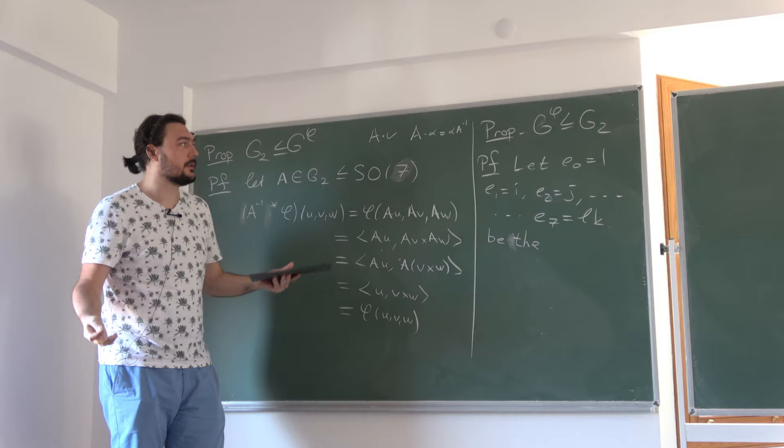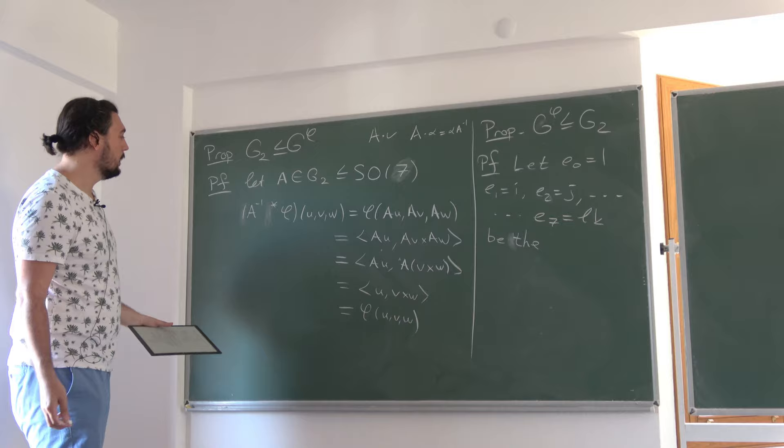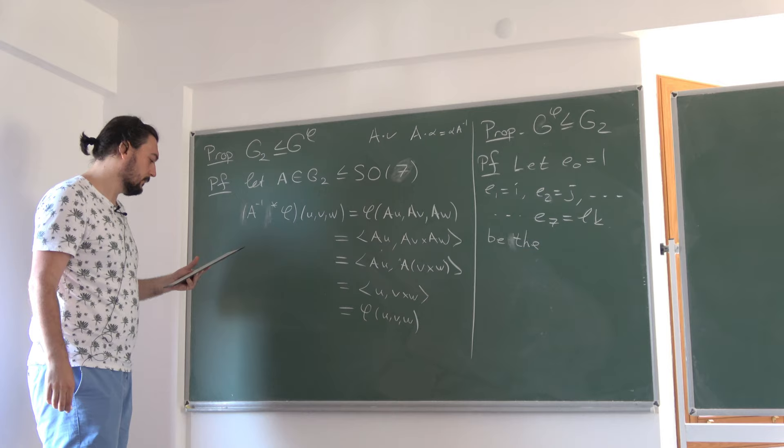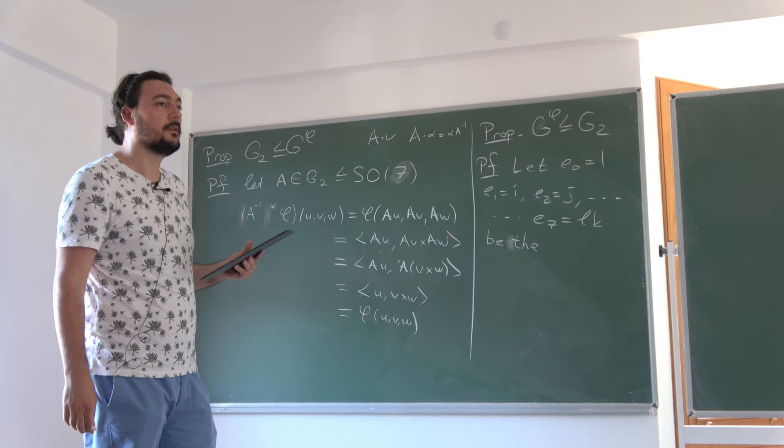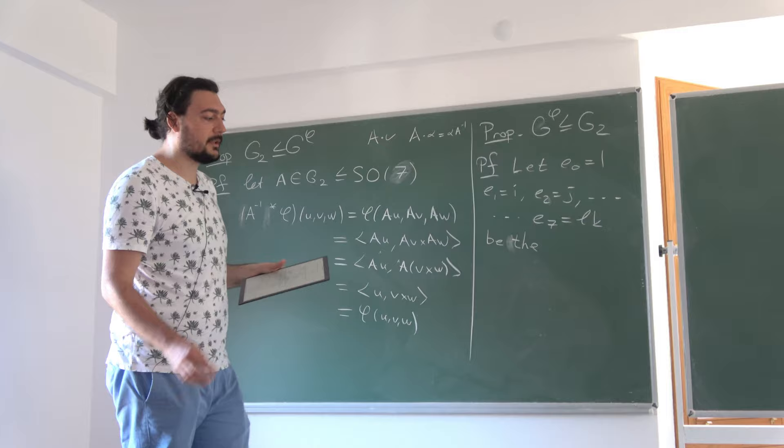Before moving on, I want to quickly write down the threefold cross product operation, since that was also one of the exceptional cross products in the classification list. It also leads to the definition of Spin(7), the big brother of G2. We define a threefold cross product operation on O as follows: u cross v cross w equals one-half times (u·v̄·w minus w·v̄·u). This is not taking the twofold cross product twice — it's a single operation taking three inputs. Note that octonions are not associative, so the order of parentheses matters here. The bar is on the second factor: u(v̄)w.